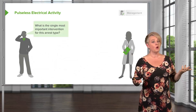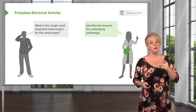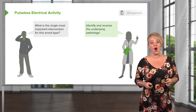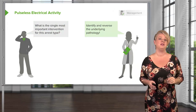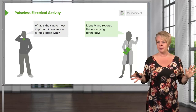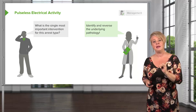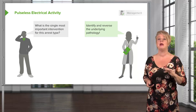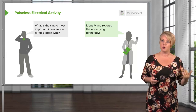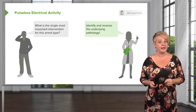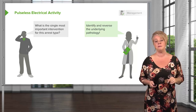What is the single most important intervention for PEA? It's a bit of a trick question. The most important intervention is to figure out what caused it and fix that. Unlike V-fib and V-tach, where we do the same thing for everybody regardless of the cause, with PEA we're only going to make the patient better if we can figure out the cause and treat it. We'll provide supportive care in the meantime, but ultimately our goal is to make a diagnosis.